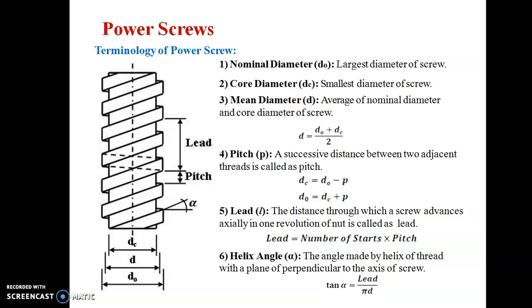If we unfold the helix for one rotation, the vertical distance traveled is the lead, and the horizontal distance covered in one rotation is the circumference, equal to π·d. Therefore, tan(α) = lead / (π·d).